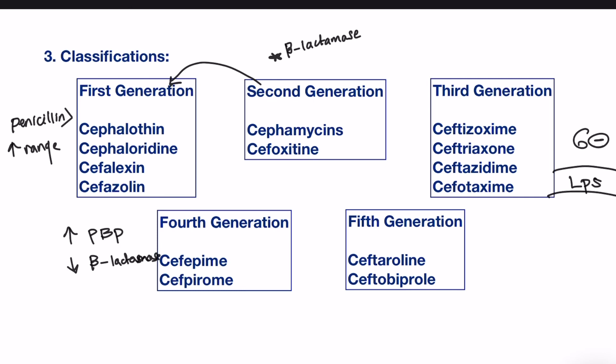Finally, we have the fifth generation. They have an extended spectrum of activity against gram-positive bacteria, including MRSA — methicillin-resistant Staphylococcus aureus — as well as multi-drug-resistant Streptococcus pneumoniae, or MDRSP. This leads us to the end of this video. I hope it was helpful. Thank you for watching.